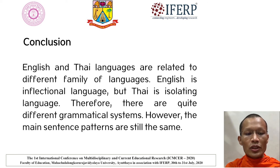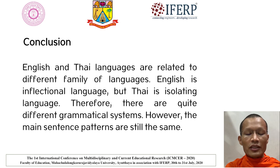Conclusion. English and Thai languages belong to different families of languages. English is an inflectional language, but Thai is an isolating language. Therefore, there are quite different grammatical systems. However, the main sentence patterns are still the same.